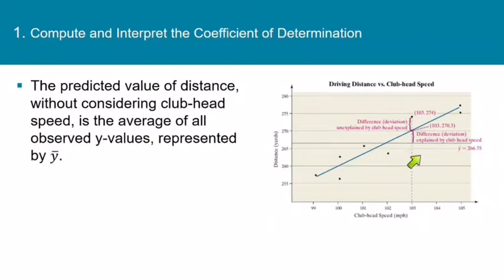Now here we have the scatter diagram and the regression equation for the data we've been using since section 4.1. This is the driving distance versus clubhead speed that we have been working with all along. The predicted value of distance without considering clubhead speed is the average of all the observed y values, represented by y bar.